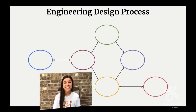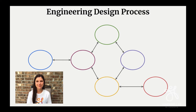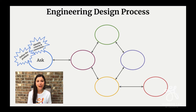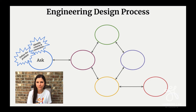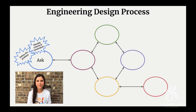The very first step of the engineering design process is to ask — simply ask a question, define your problem. Maybe you might ask: who does this problem affect? How does it affect them? Why is this problem important for us to solve? As you begin to answer these questions, you start to identify and develop your criteria and constraints. You'll develop your criteria by asking yourself...